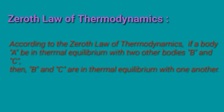The Zeroth law of thermodynamics says that if body A is in thermal equilibrium with body B, and also body A is in thermal equilibrium with another body C, then body B and C are also in thermal equilibrium with each other.